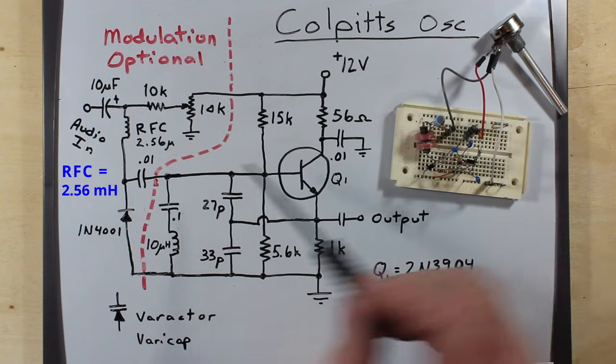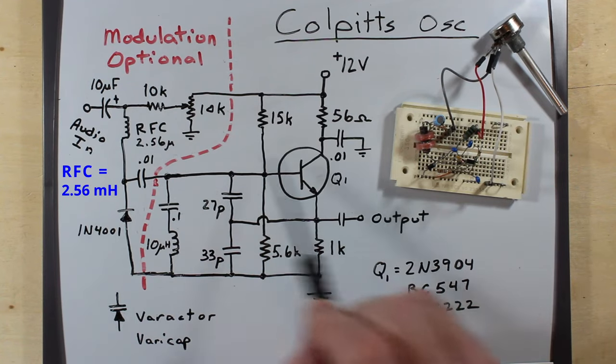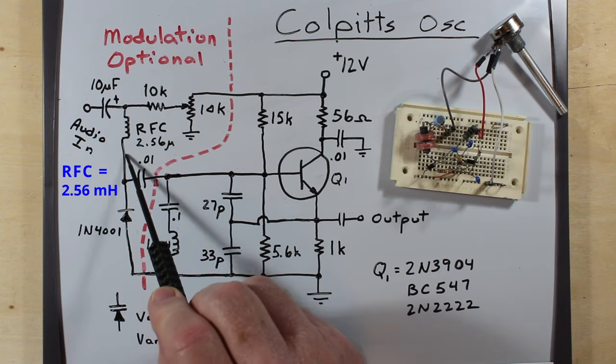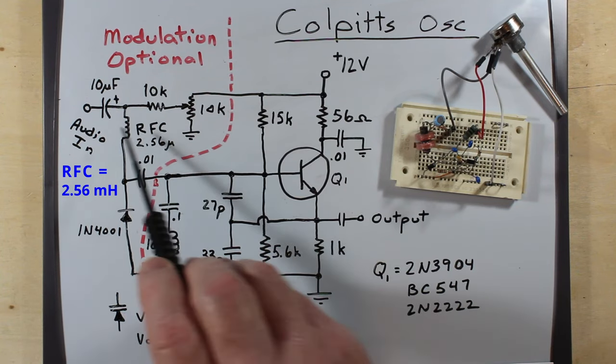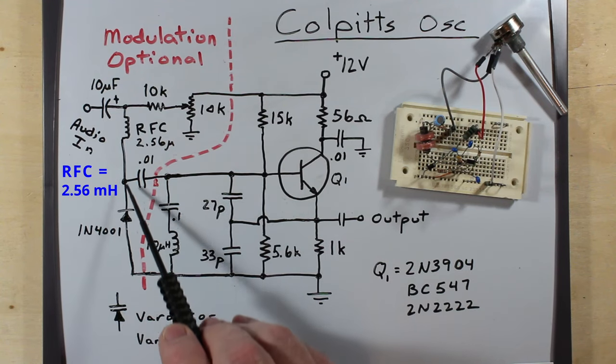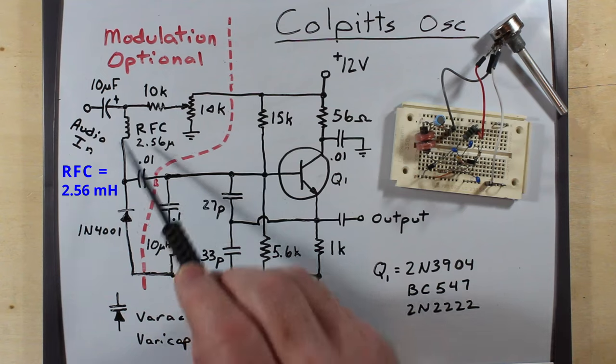So I measured that inductor and had came up with 2.56 micro Henry's. That's not really critical. What is critical is that this blocks the RF from going out this way yet allows the low audio tones to come in this way. So that's why that is there.